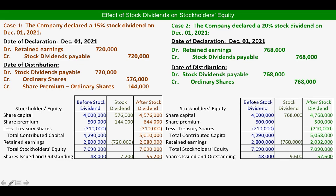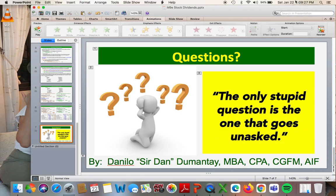For Case 2, the effect of the 20% stock dividend is a reduction in Retained Earnings of ₱768,000 and an increase in Share Capital of ₱768,000 — it is simply a movement within equity from Retained Earnings to Share Capital, with no Share Premium. The number of shares issued as stock dividends is 9,600 (48,000 × 20%). If you have questions, please let me know. Stay safe, class, and have a great day.